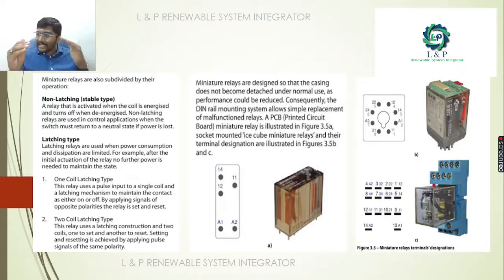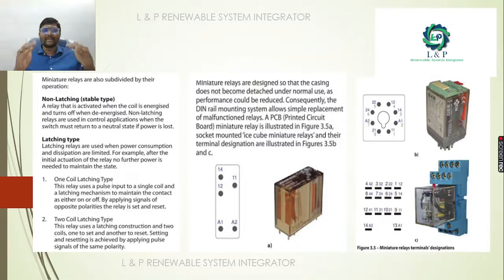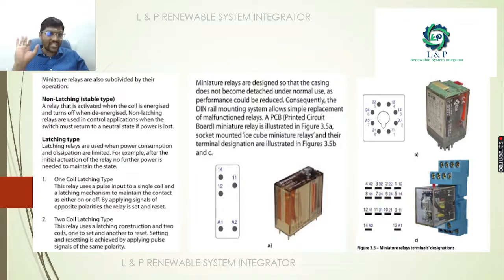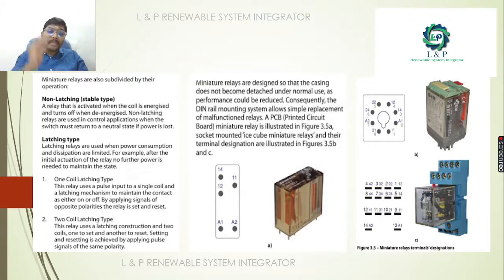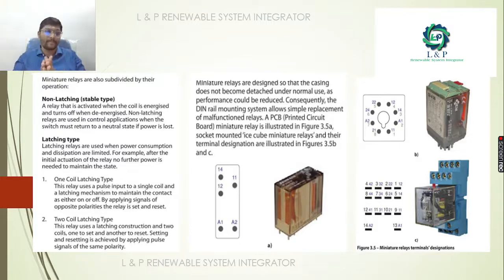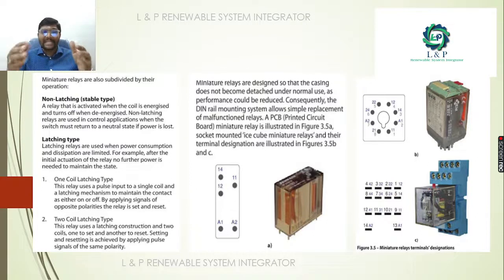Miniature relays are divided into non-latching and latching types. A non-latching relay is activated only when the coil is energized and turns off when de-energized; it is mostly used for controlling applications where the switch must return to neutral if power is lost. A latching relay is used when power consumption is limited — after actuation, no further power is needed to maintain the state. Latching types include one-coil and two-coil latching. Nowadays relays are also printed on PCB circuits, looking like an ice cube miniature relay.